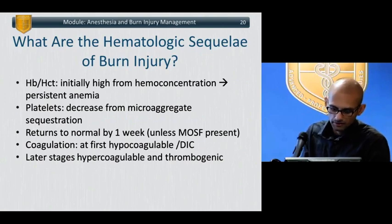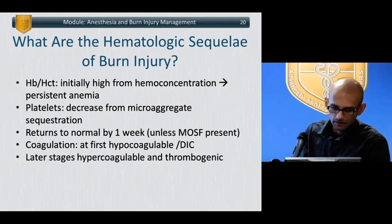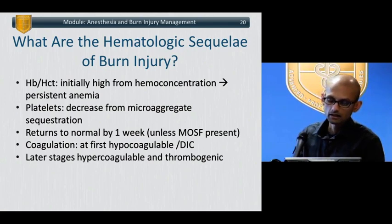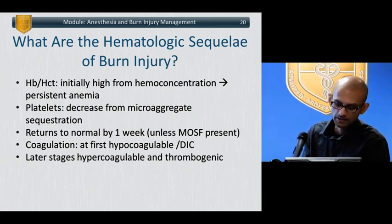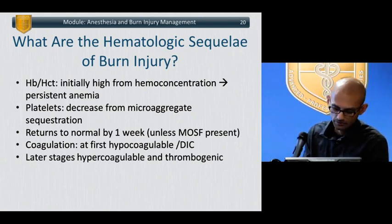Hematologic sequelae of burn injury: initially there is a high hematocrit due to hemoconcentration from hypovolemia, which transitions to a chronic anemia of disease over time. Platelets are sequestered and thrombocytopenia develops. This generally returns to normal by one week unless multi-organ system failure develops, in which case patients can develop DIC, thromboses, and diffuse microvascular bleeding. Coagulation is at first in a hypocoagulable state, but these patients are at high risk for deep vein thrombosis over time.